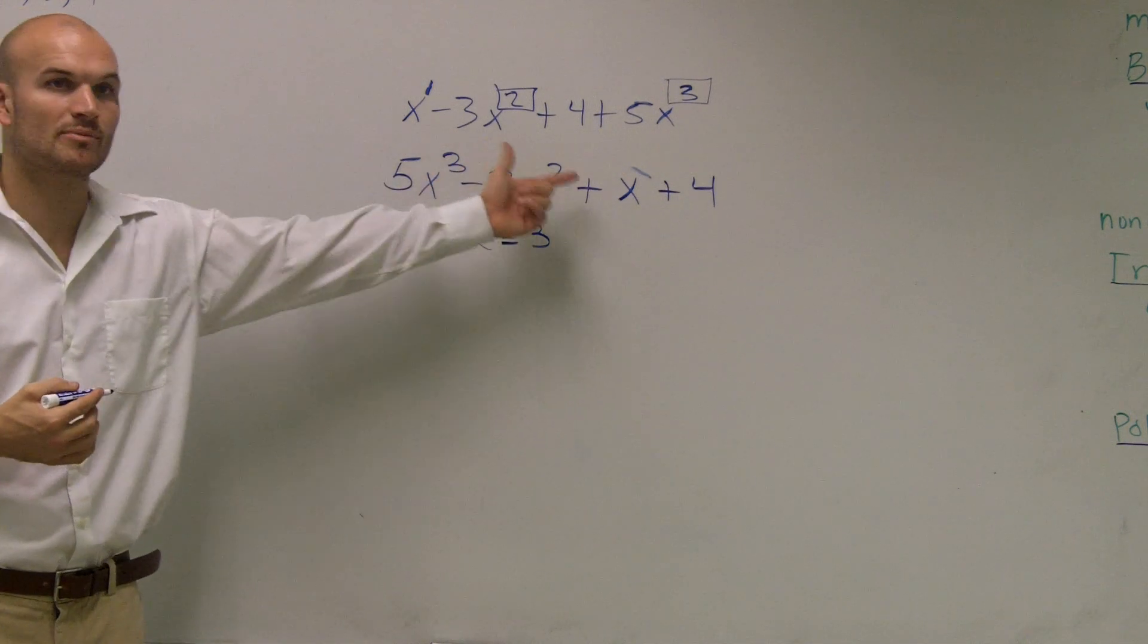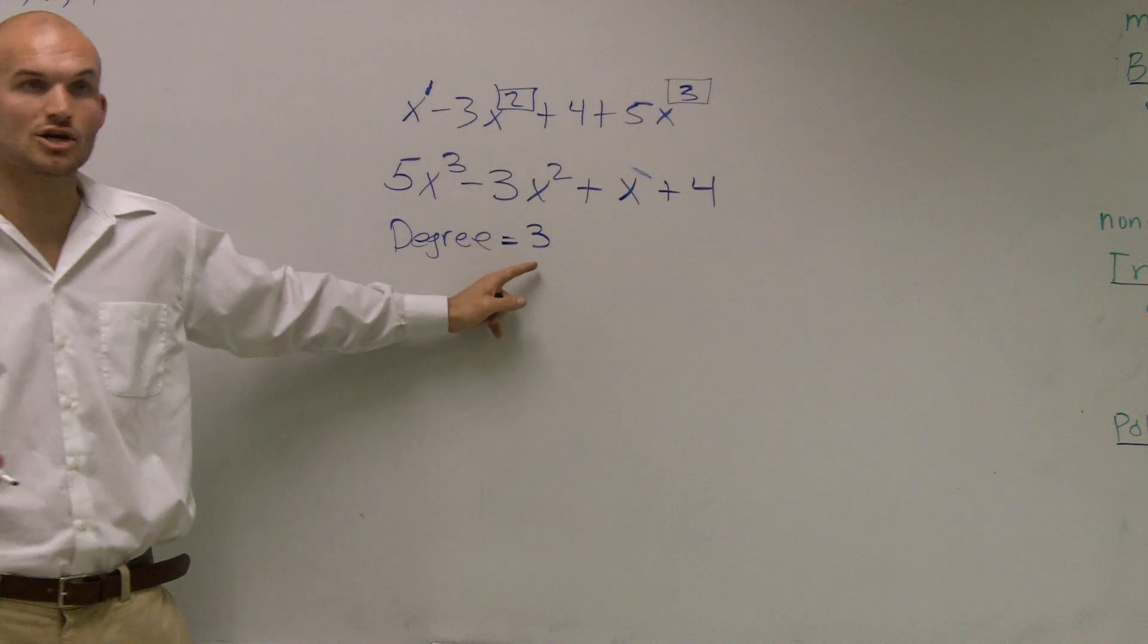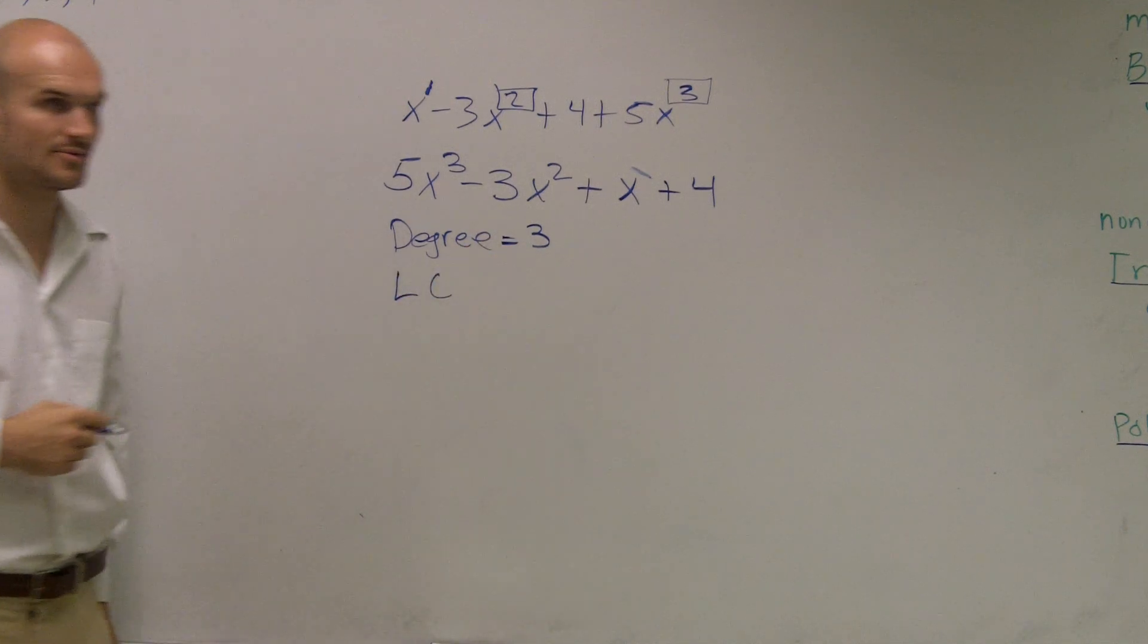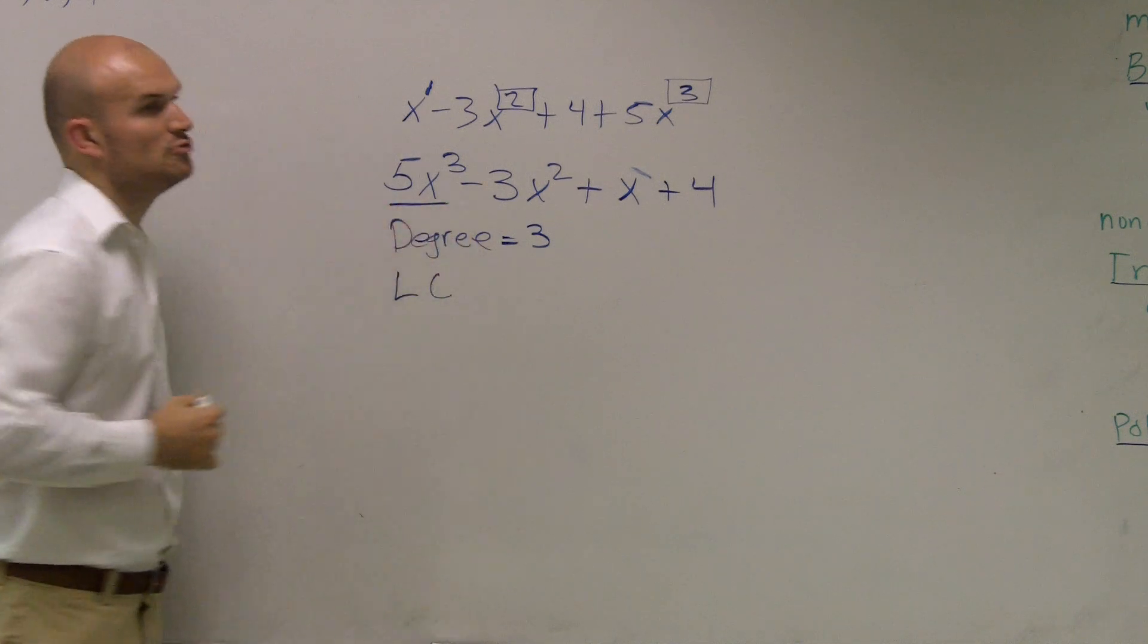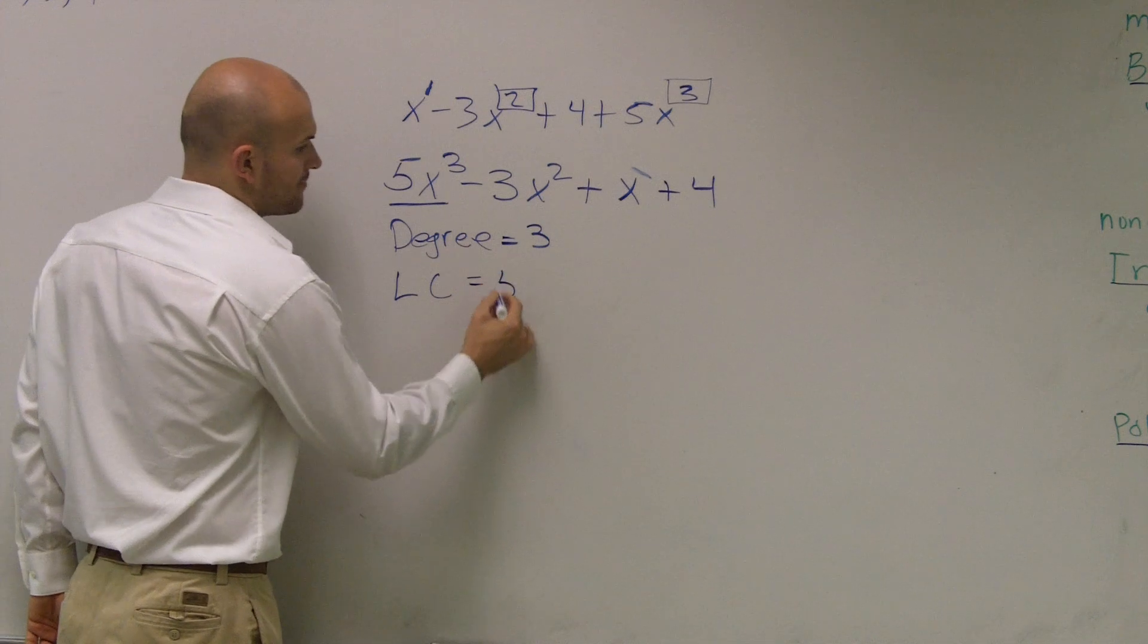Each one of these monomials has a different degree, but the degree of the whole polynomial is the largest degree, which is 3. And then the leading coefficient is of your front term into numeric coefficient of your variable, which in this case is going to be 5.